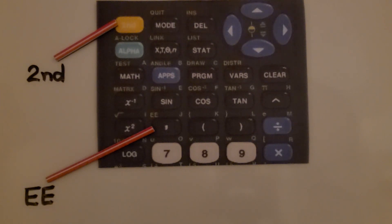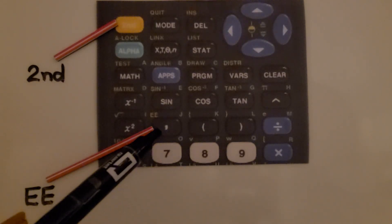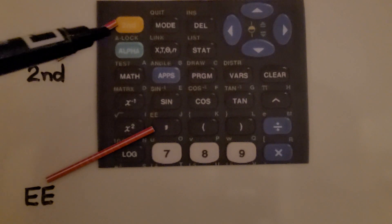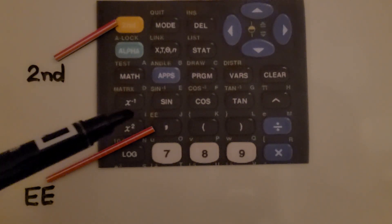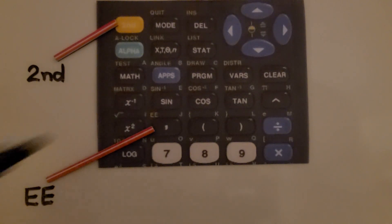If we look very closely at the scientific calculator, you'll see the yellow button that says second, and over this comma button, you'll see the EE right there. If we push second, then that's going to enable all the functions that are above these keys, and that will enable the EE.